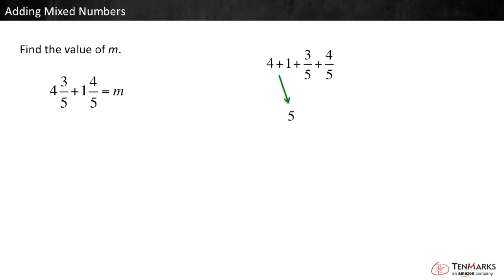4 plus 1 equals 5. 3 fifths plus 4 fifths equals 7 fifths. Altogether, we have 5 and 7 fifths.